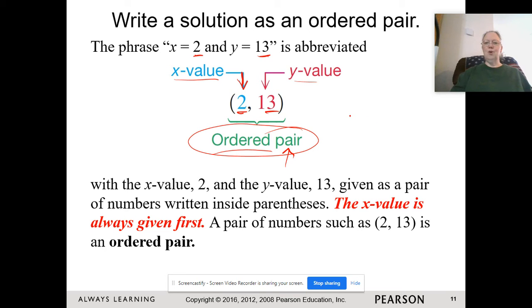If you go further in math, if you take pre-calculus or maybe calculus, you would have what's called an ordered triple, where the first number is your x, your second number is the y, and the third number is the z. So we always go in alphabetical order. The x value is always given first.